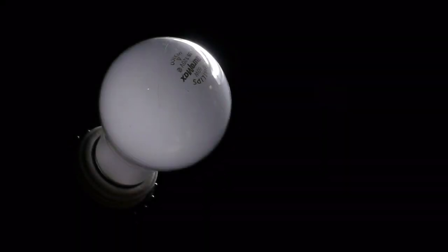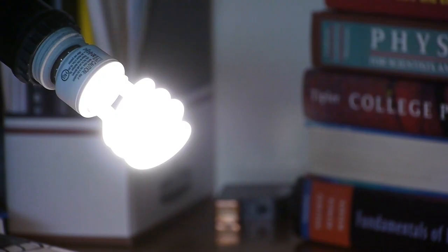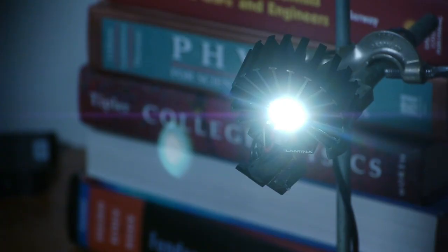An incandescent bulb. For many years, this was the only type of electric light you could buy. Now, thanks to new technologies, there are a variety of lighting options: halogen, compact fluorescent, and LED.